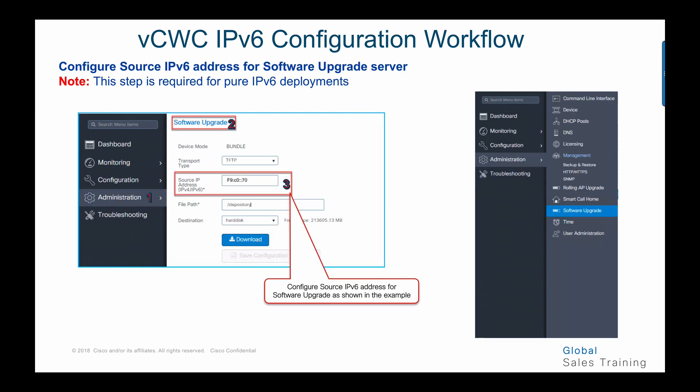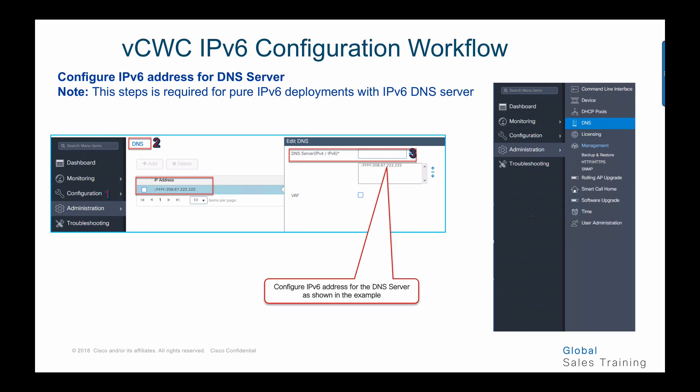This screen shows how to configure the source IPv6 address for the software upgrade server. This is an optional step — choose software update from the global menu, go to administration, choose the software upgrade tab, and enter the source IP address for the software upgrade server.